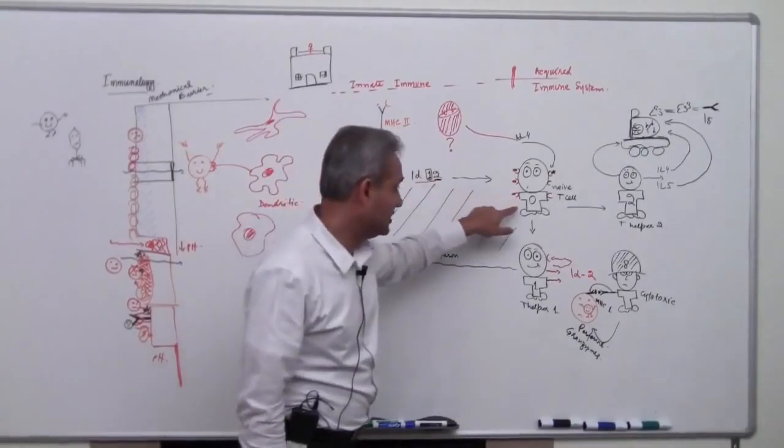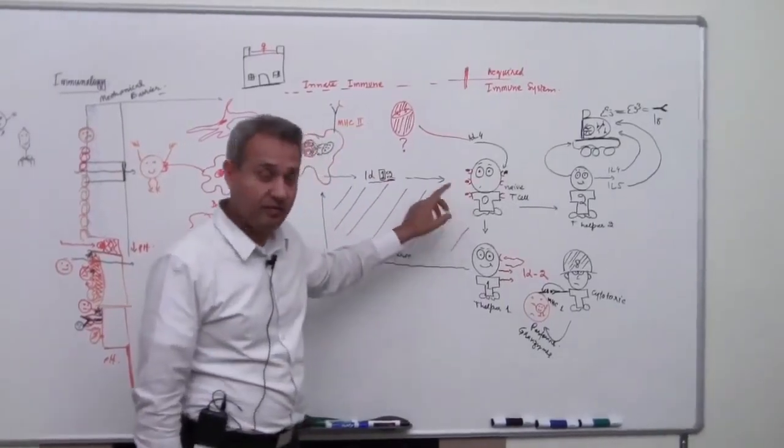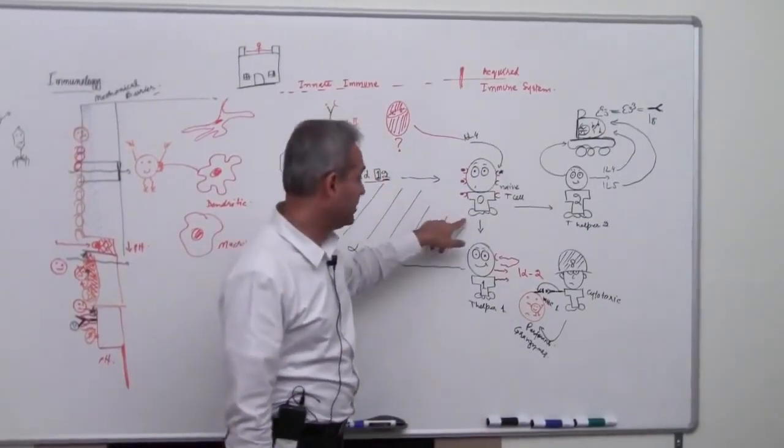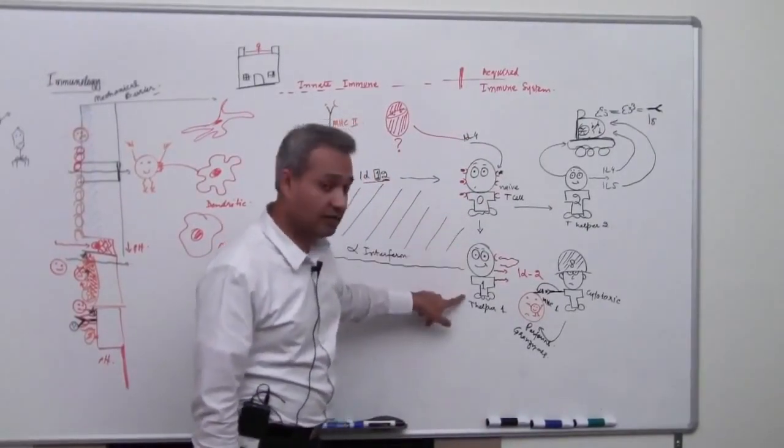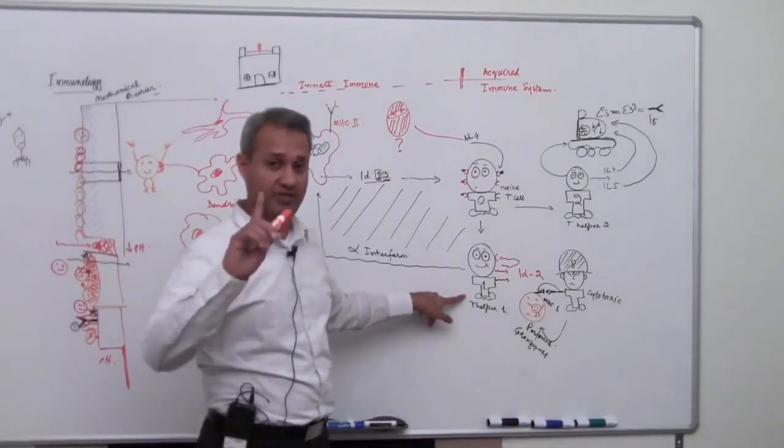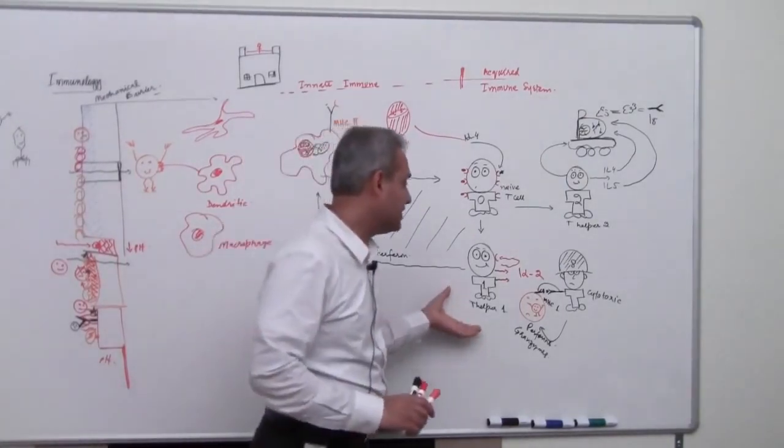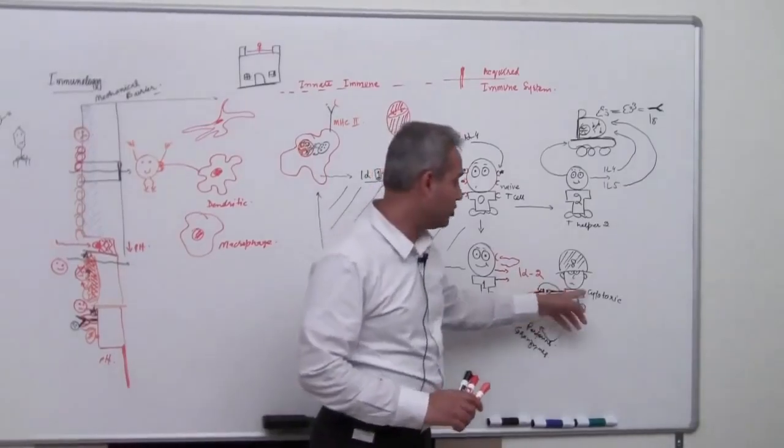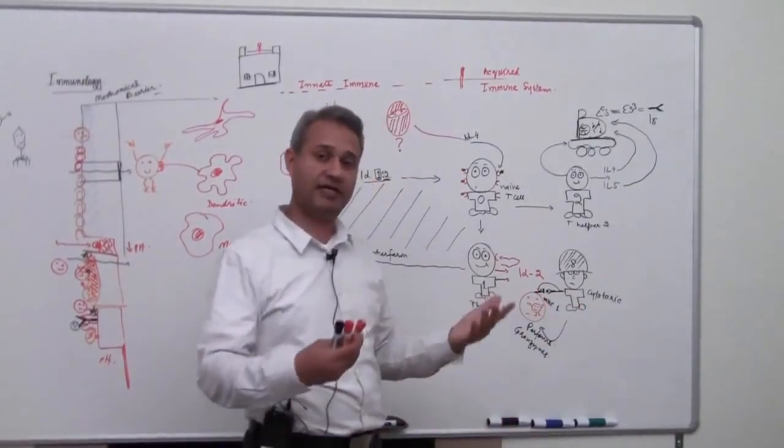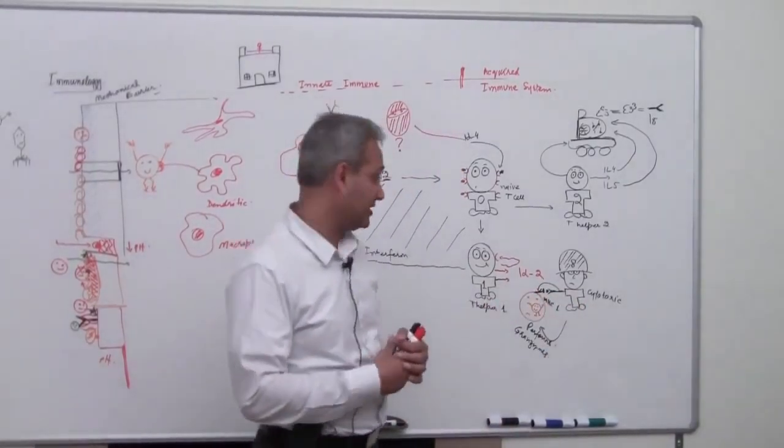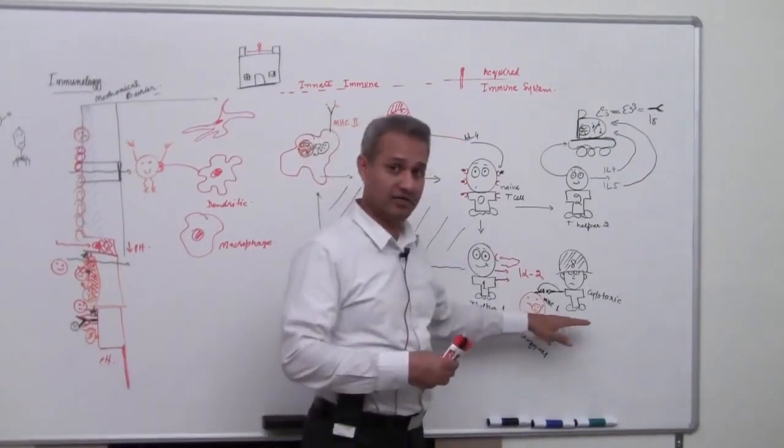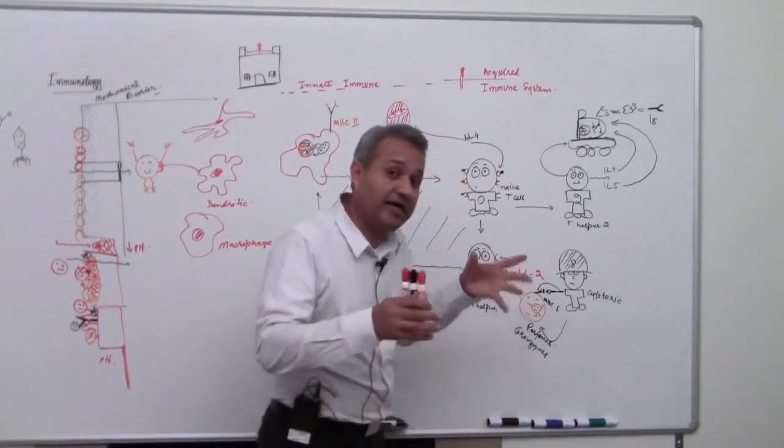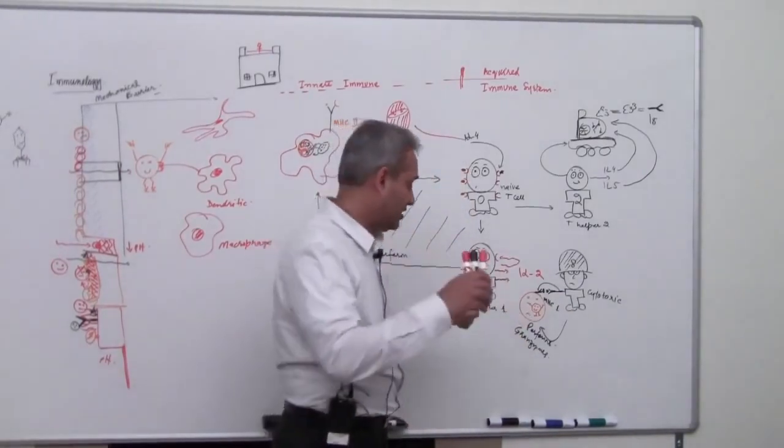We talked about this in this lecture and previous that IL-12 will be released. IL-12 would cause the naive T cell which is part of acquired arm to activate. The naive T cell would become a helper T cell, helper T cell 1. The helper T cell 1 would then secrete interleukin 2 which would cause cytotoxic T cells to become active. So cytotoxic T cells are really bad. These guys are going to pick up cells which have gotten pathogens hiding in them and then kill them.